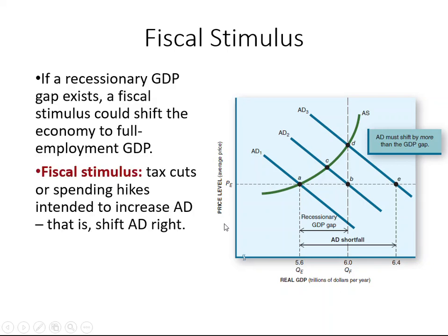The goal of fiscal stimulus is to shift the AD1 curve to the right so that we can close the QE and QF gap. The possible fiscal stimulus tools include tax cuts. If the government reduces taxes, each individual or business will have more disposable income. Based on the multiplier effect, people will spend more, bringing more revenue to businesses, businesses will produce more, and workers will get more income — generating momentum to stimulate the economy.